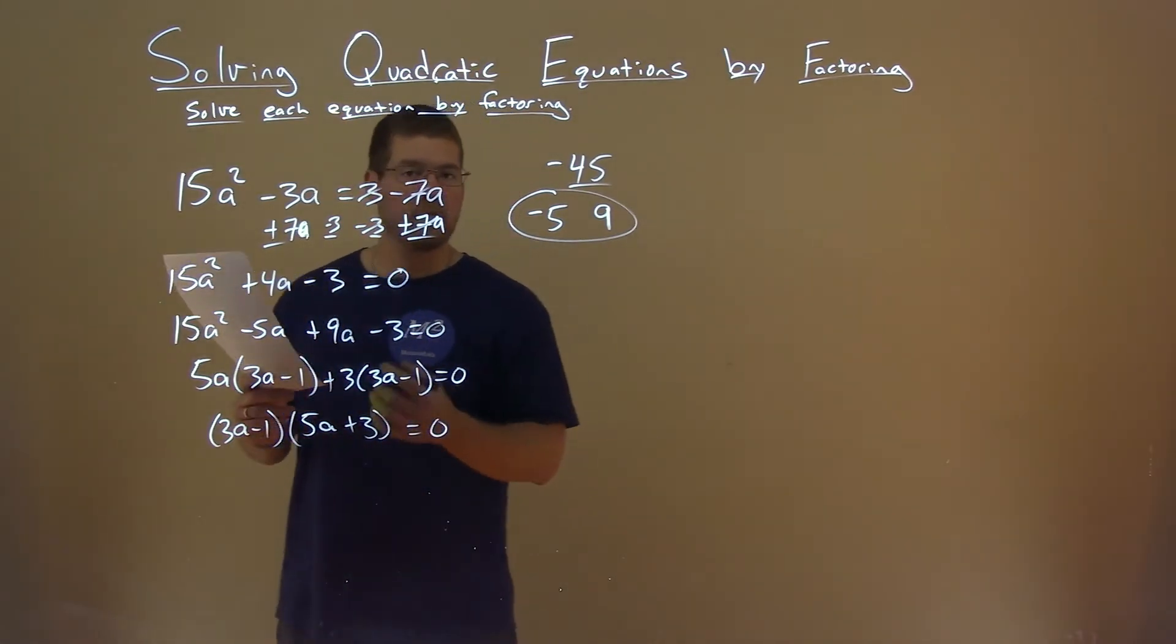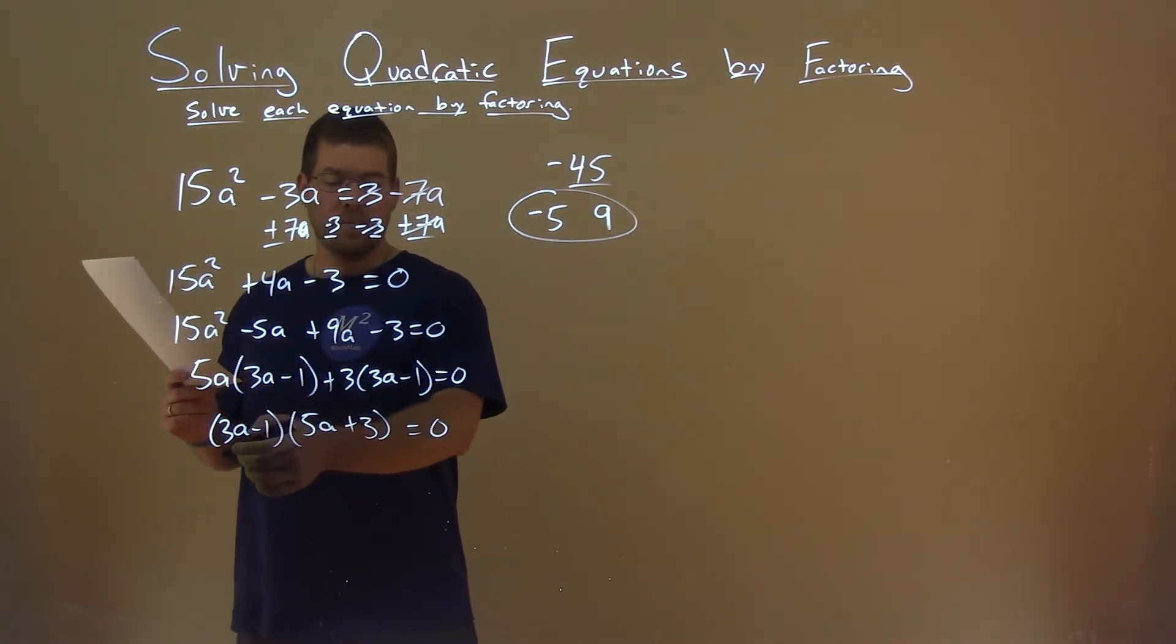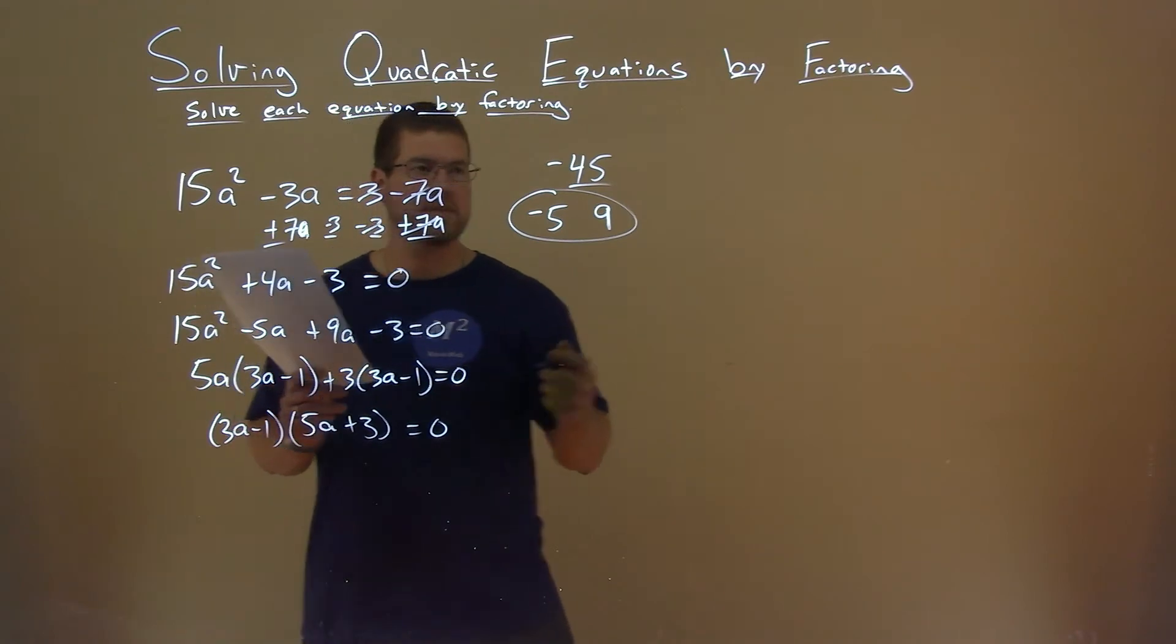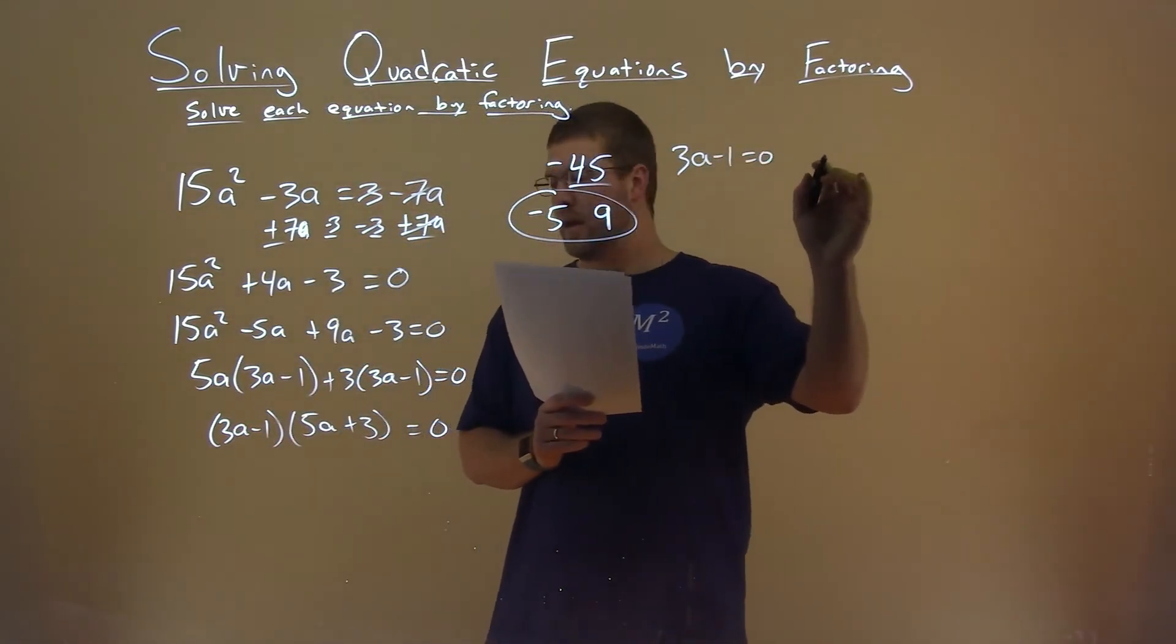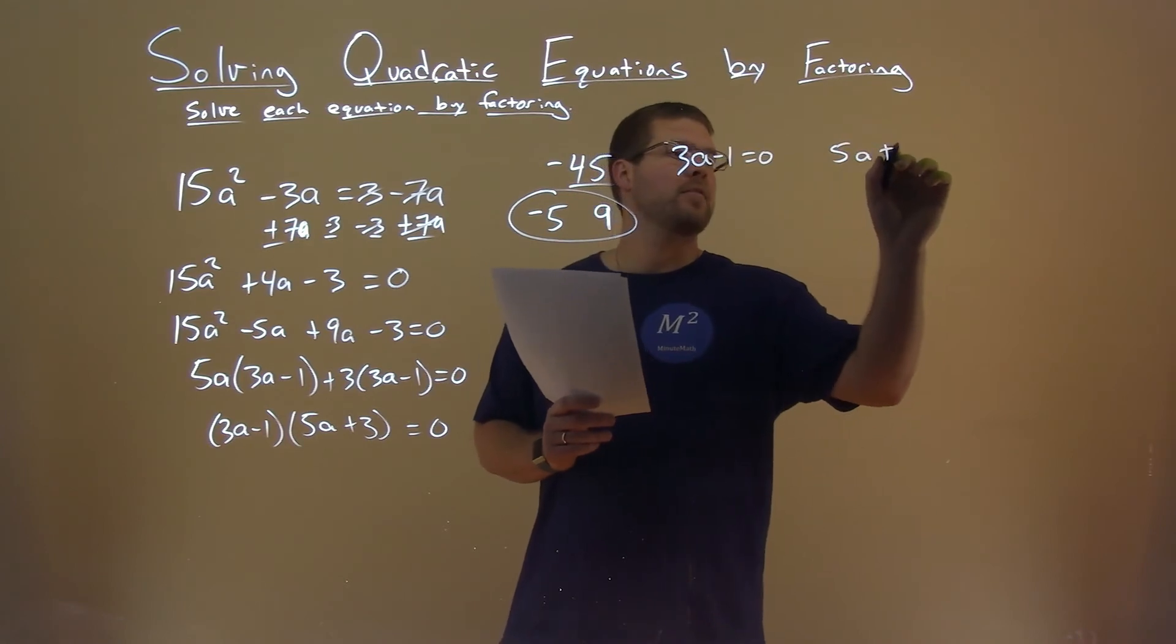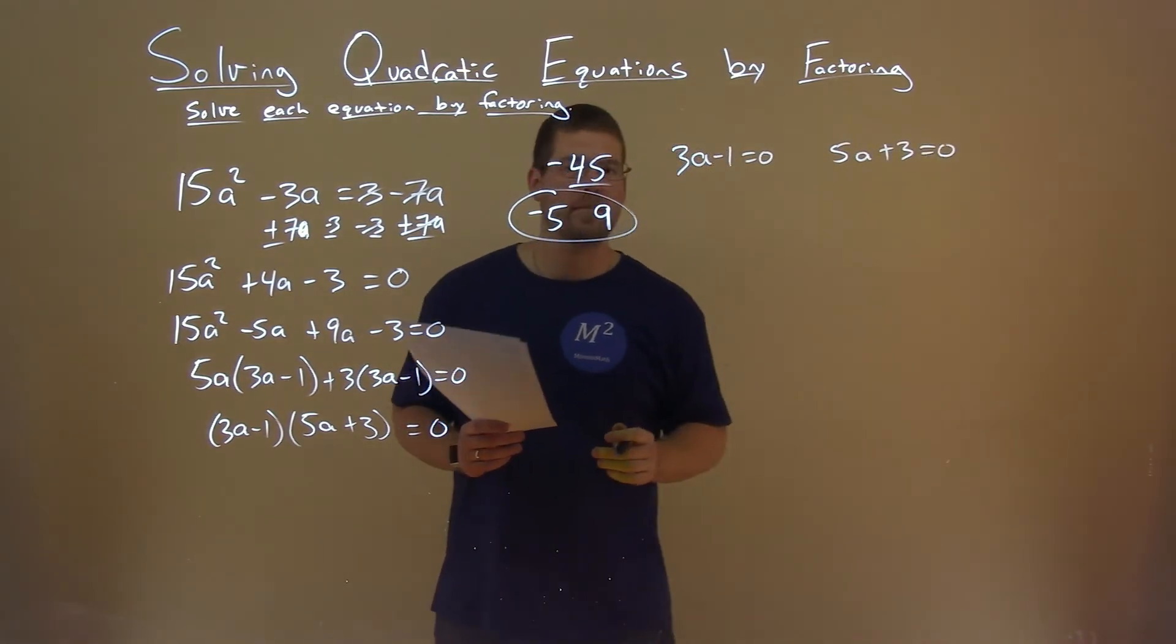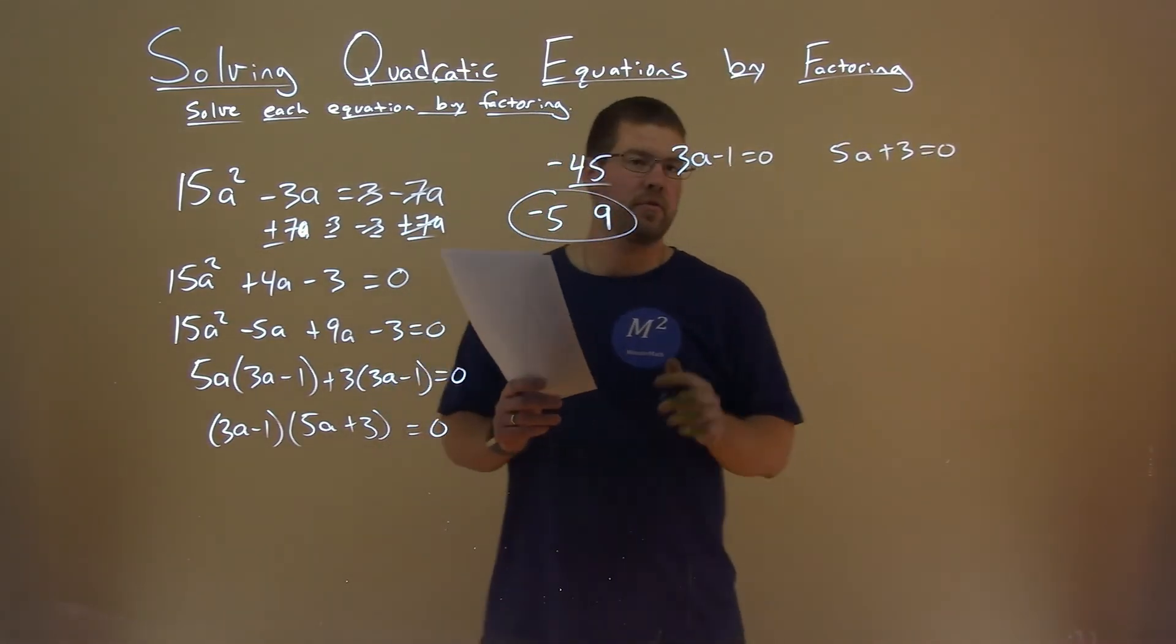So now we have it in factored form. We can set both parts now equal to 0. 3a - 1 = 0, and 5a + 3 = 0. And now we're going to solve for a.